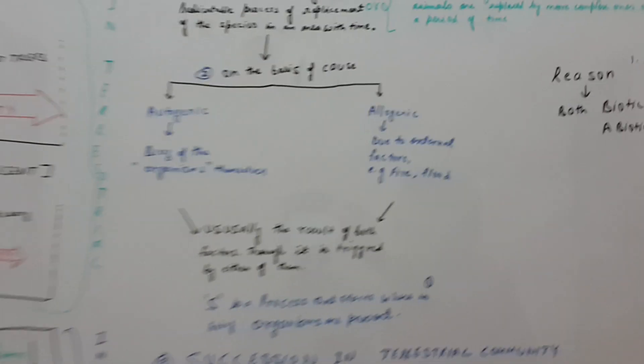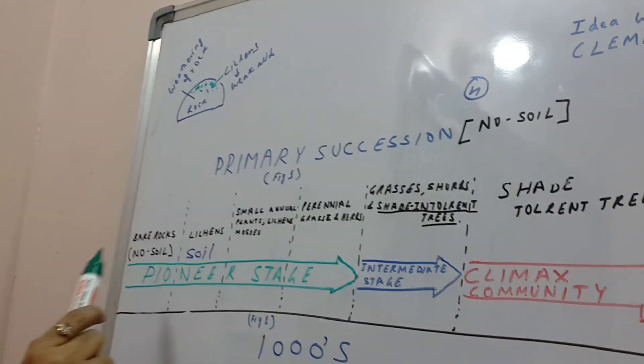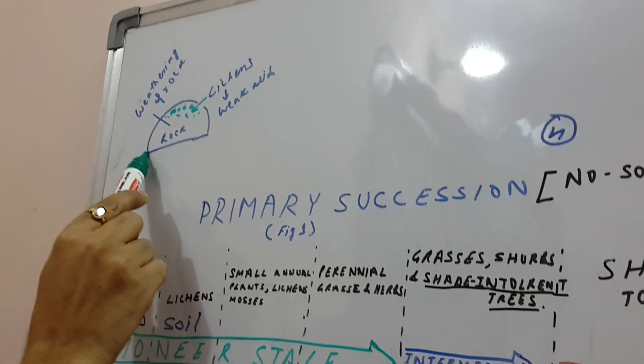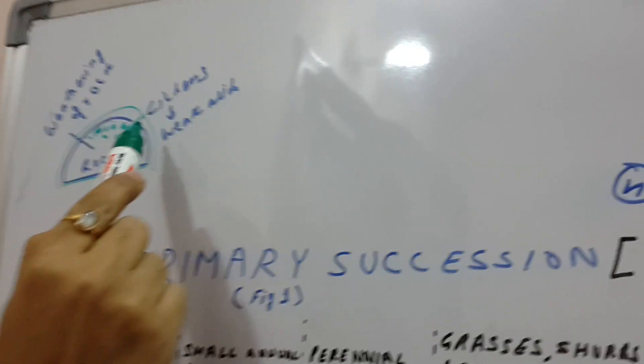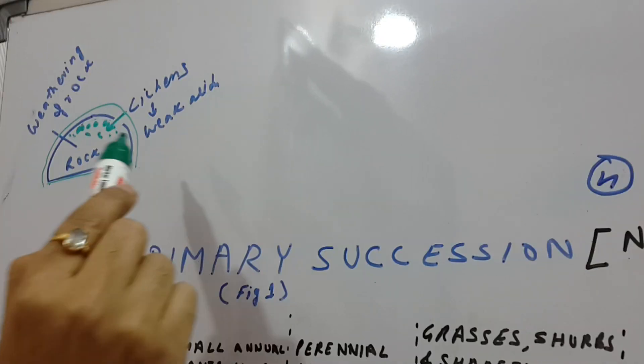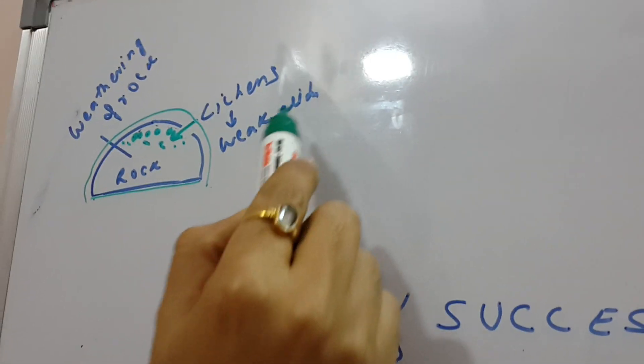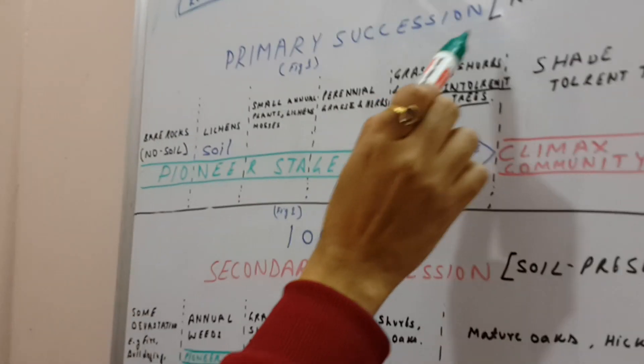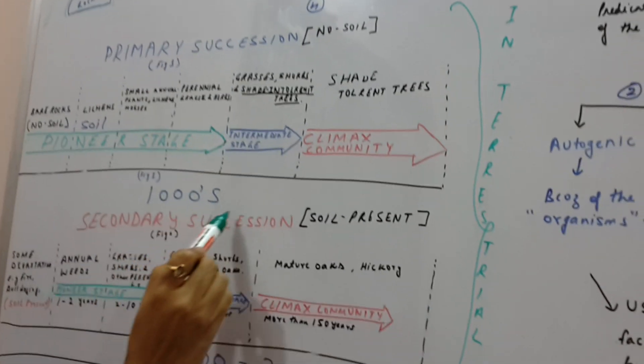Now I will show it to you through a diagram. In primary succession, life has not existed before. For example, there is a rock, and here lichens have started accumulating. These lichens are a symbiotic association of fungus and alga. These lichens produce weak acids, and this leads to the weathering of the rocks. So in primary succession, no soil was present, and because of this, primary succession takes thousands of years.